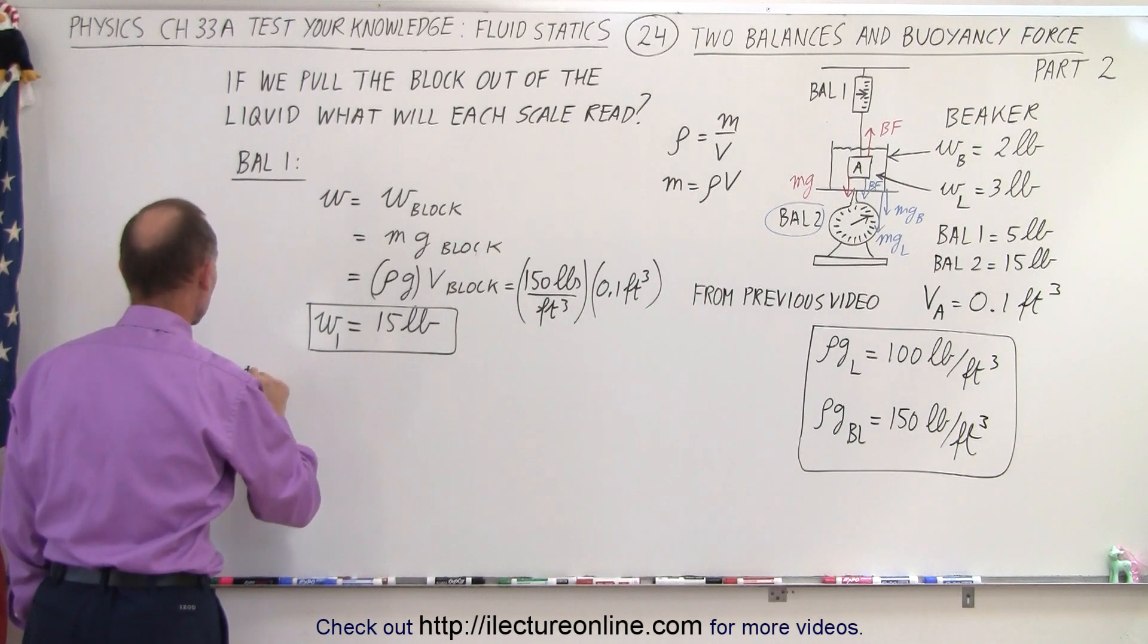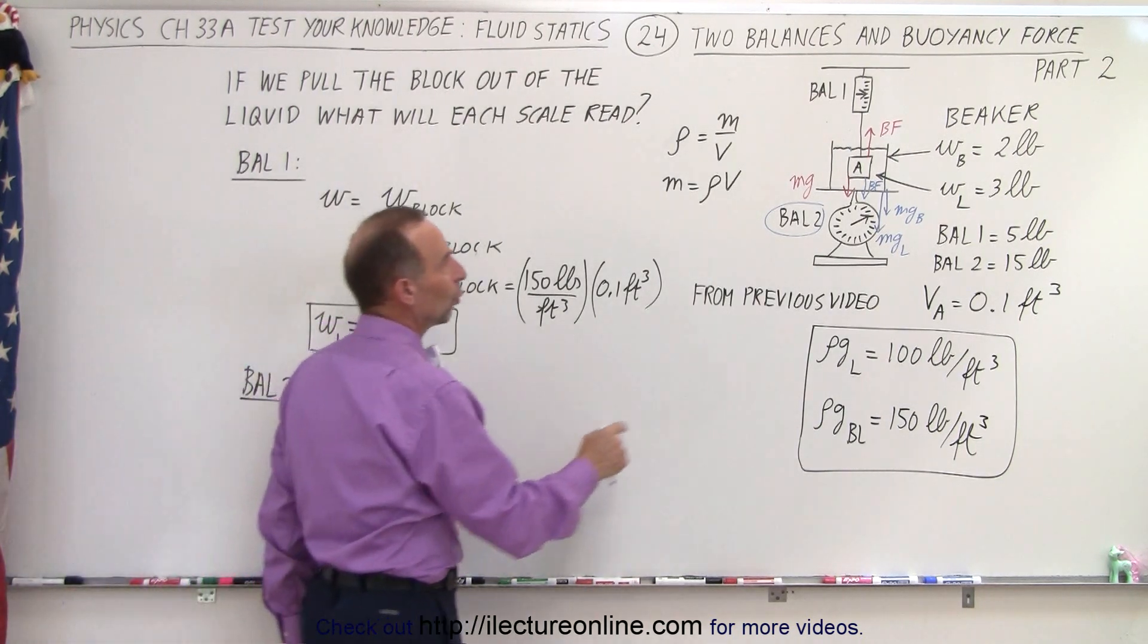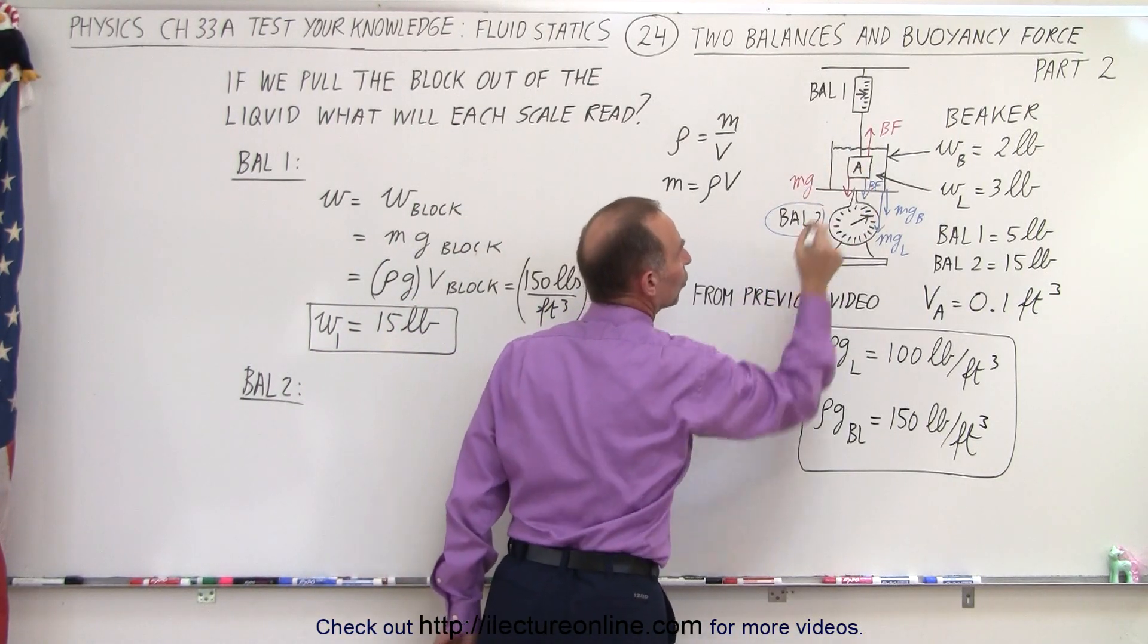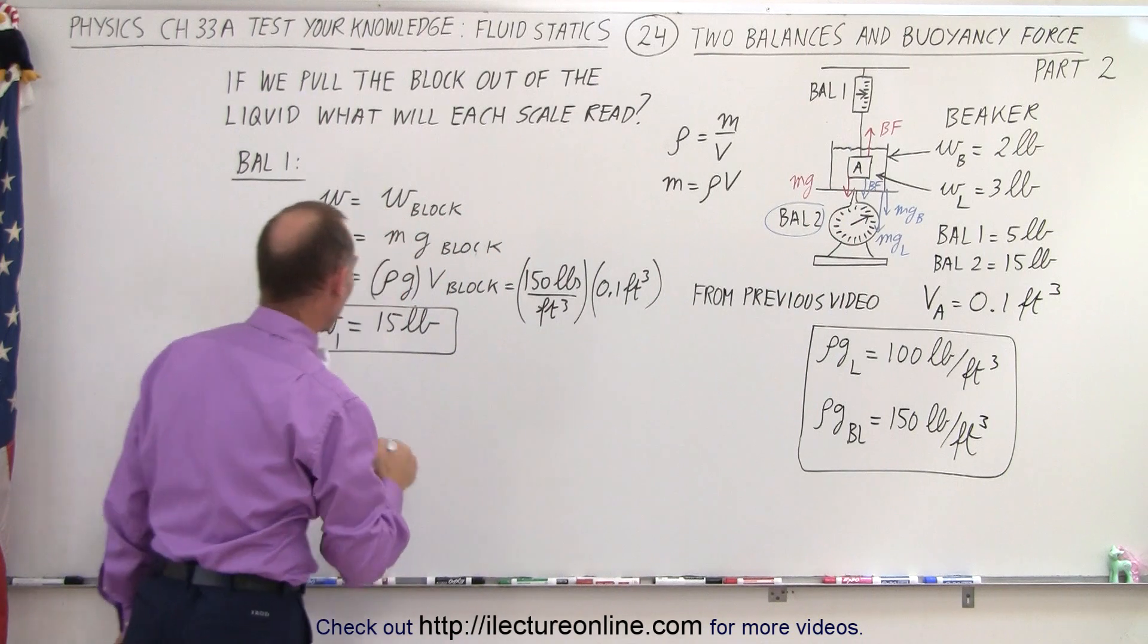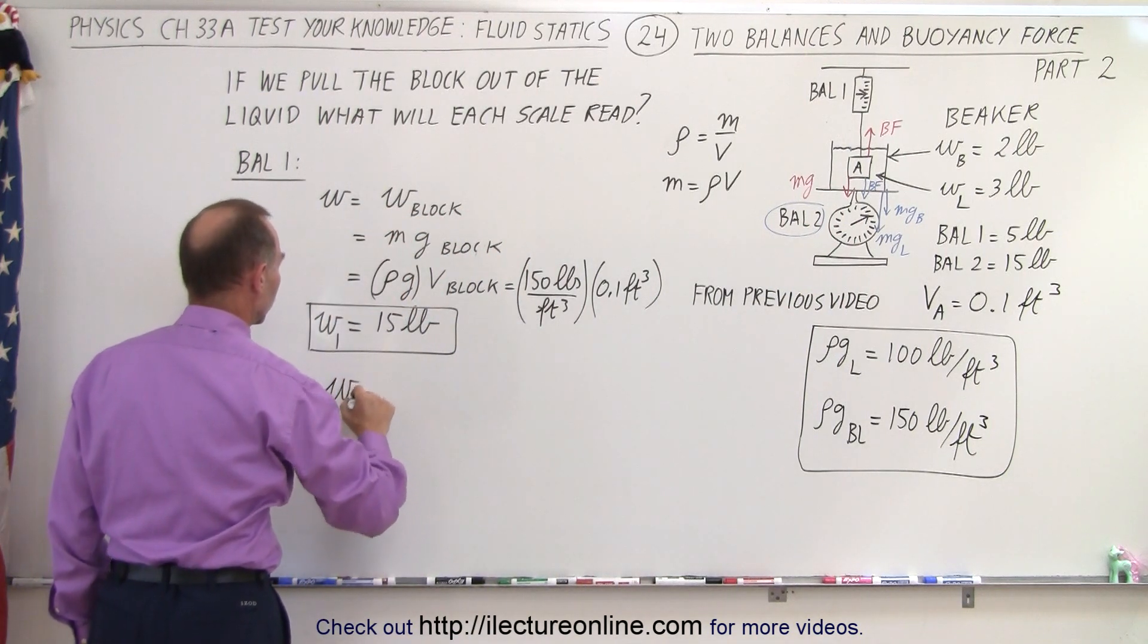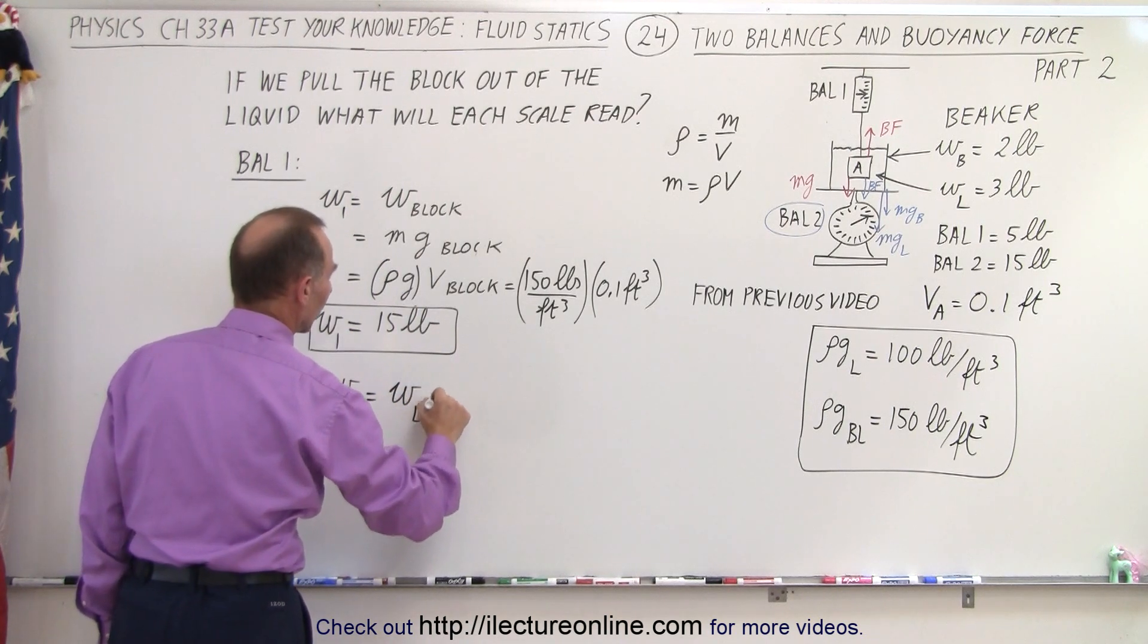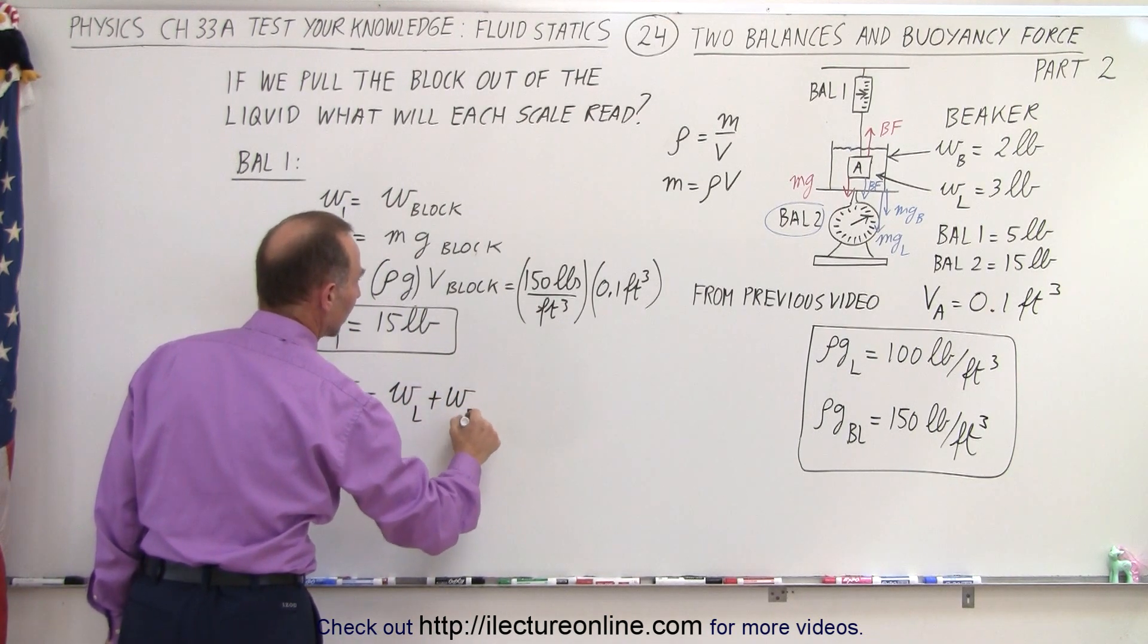Now what would balance 2 read? Balance 2 now would read the weight of the beaker plus the weight of the liquid, no longer the buoyancy force of the block. So weight 2 would be equal to the weight of the liquid plus the weight of the beaker.